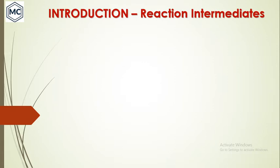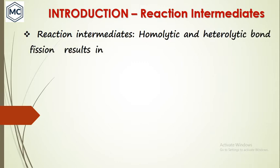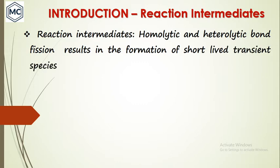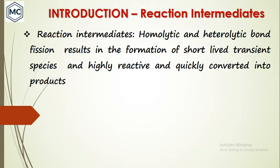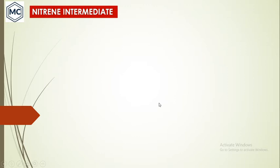We already know what reaction intermediaries are — they are usually formed by homolytic or heterolytic bond fission, which results in the formation of short-lived transient species. They are highly reactive and quickly converted into products. This is the structure of nitrene and this one is benzyne. We will discuss nitrene first.